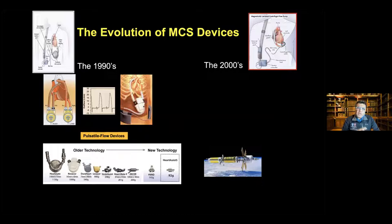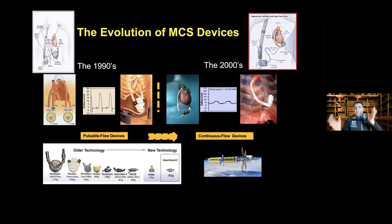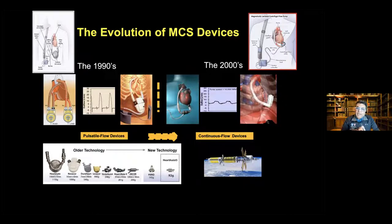Durable mechanical circulatory support really began in earnest in the 1990s with the introduction of very large, bulky devices that turned out not to be so durable. We were somehow misled into thinking we needed to mimic the biology of the left ventricle — the way it undergoes systole and diastole — and the price we paid was durability loss. Devices have since become much smaller with fewer moving parts, and the 2000s introduced continuous flow devices using space technology inspiration.